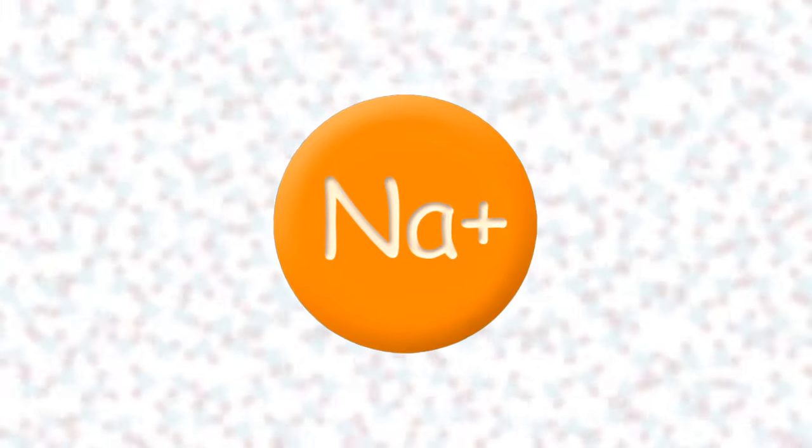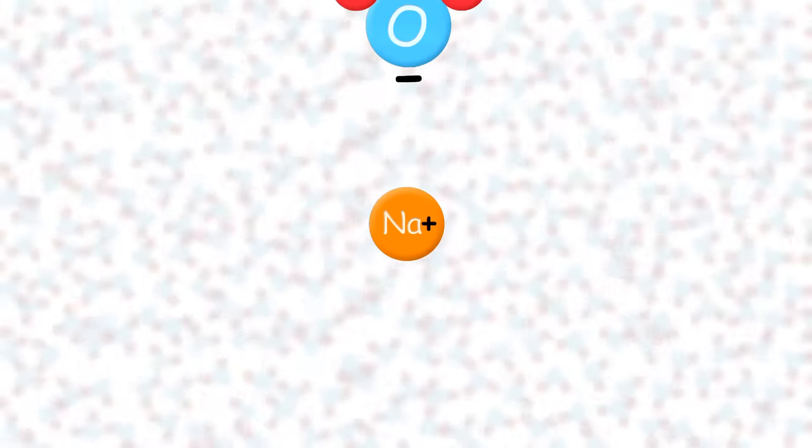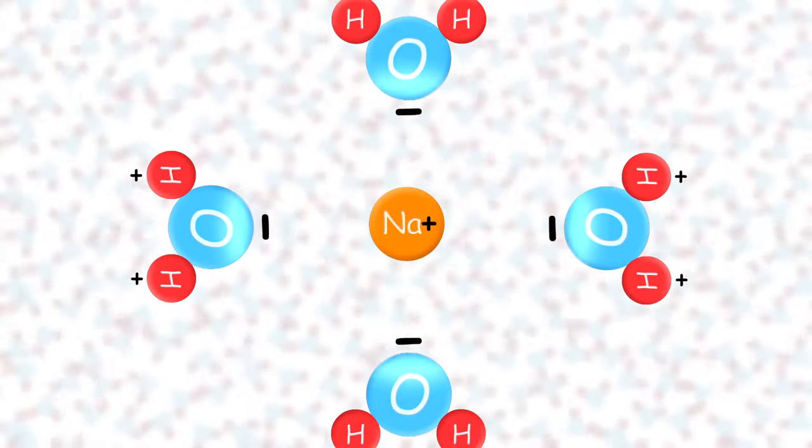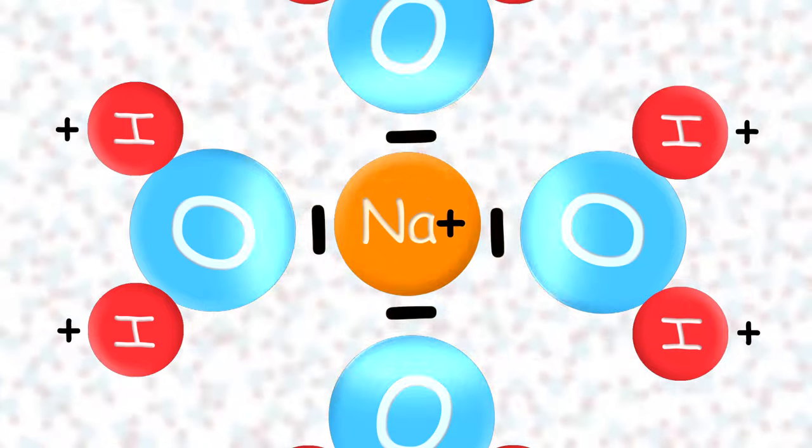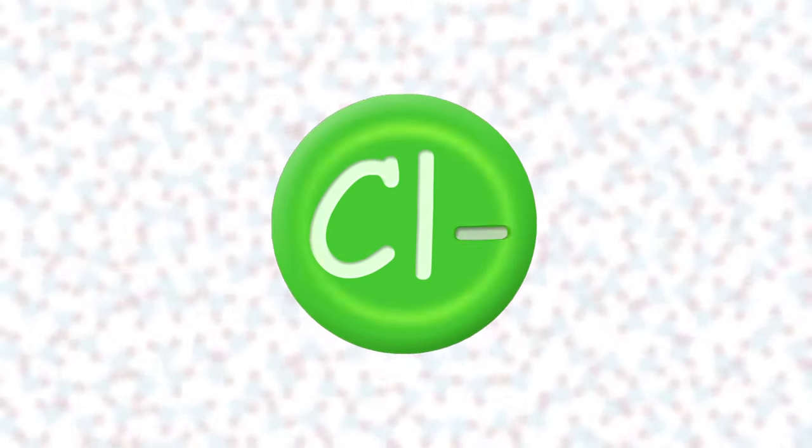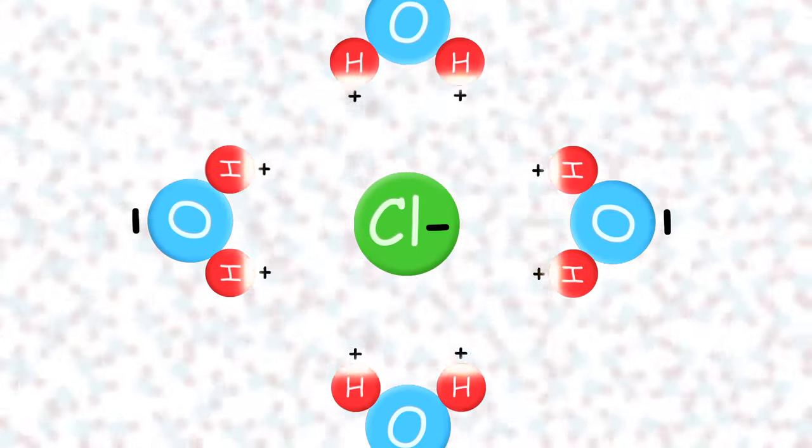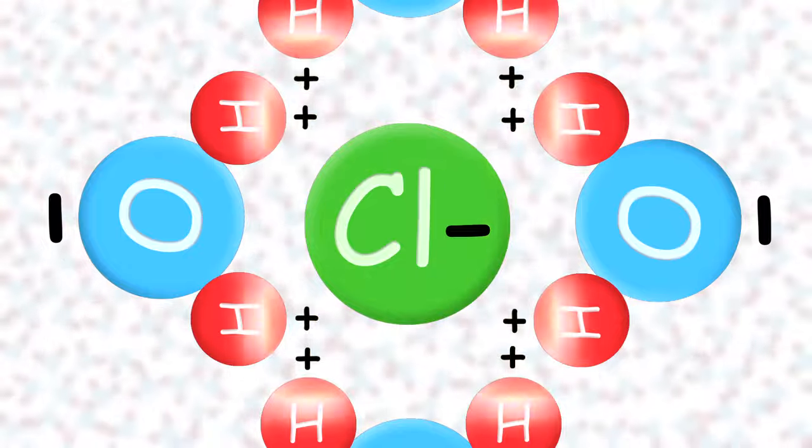Because sodium ions have a positive charge, each one is swarmed by H2O molecules flying at it with their negatively charged oxygen sides, completely surrounding the sodium ion, isolating it, carrying it off in a turbulent sea of H2O molecules. The same thing happens in reverse to the chloride ions, which have a negative charge. Each of those is surrounded and isolated by H2O molecules leading with their positively charged hydrogen sides.